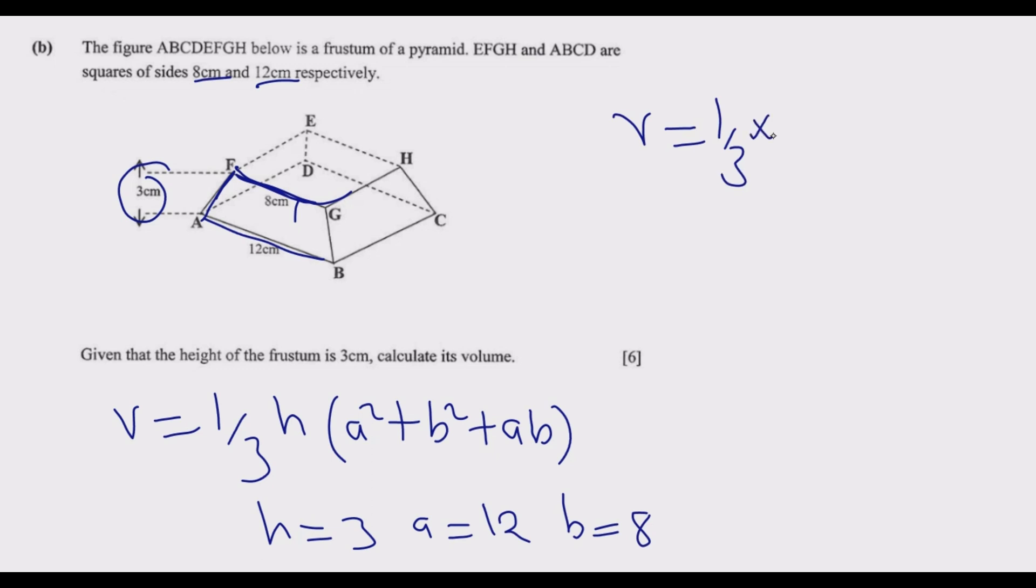Then we multiply by 12 square plus 8 square plus 12 times 8. When we multiply that, we end up with 304 centimeter cube.